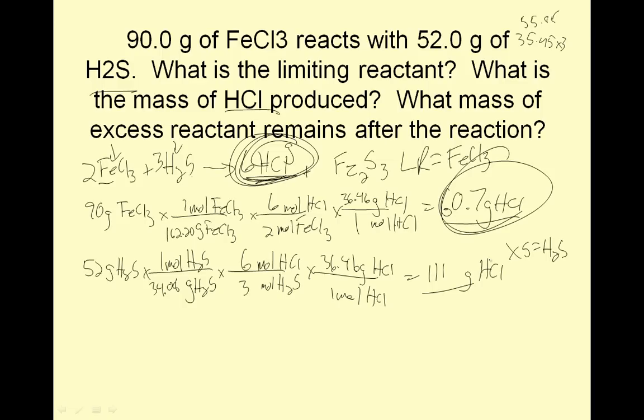What mass of excess reactant remains? I'm going to take my limiting reactant, FeCl3, and convert it into H2S. Grams of FeCl3, which is 162.20. One mole of FeCl3. Moles of FeCl3. I want to go into grams of H2S. Before I go into grams, I must first go through moles. Always go through moles. Three over two.